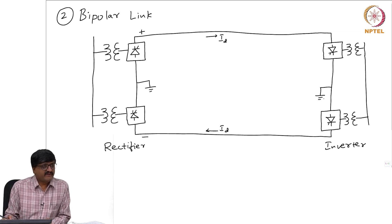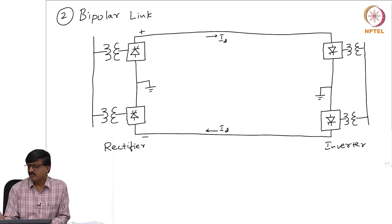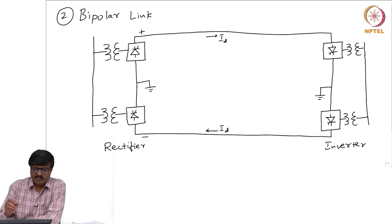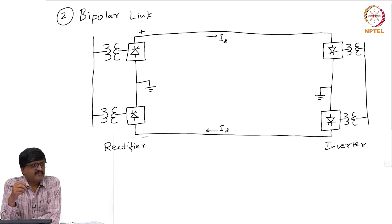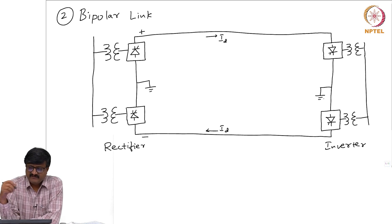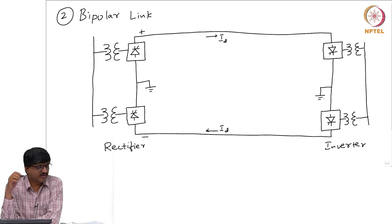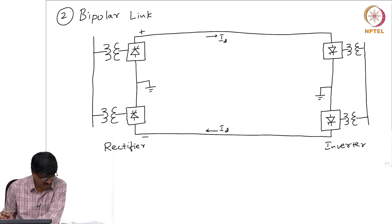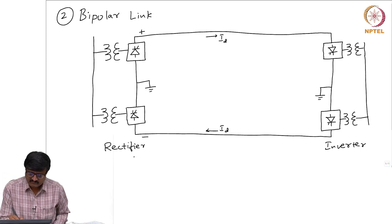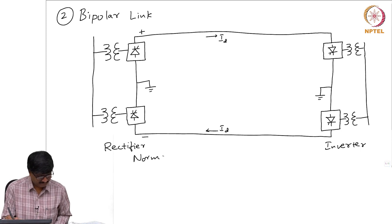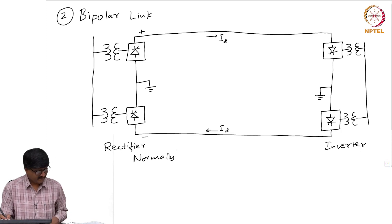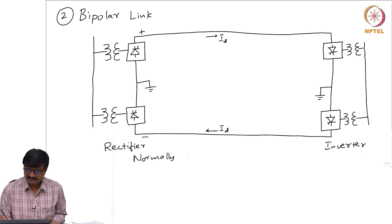The purpose of grounding on both sides does not mean that current will flow through the ground, though there is a closed path. The two 12-pulse converters are operated identically so that the current I_d is flowing only through the two conductors and there is no current through the ground. Normally, ground current is zero.